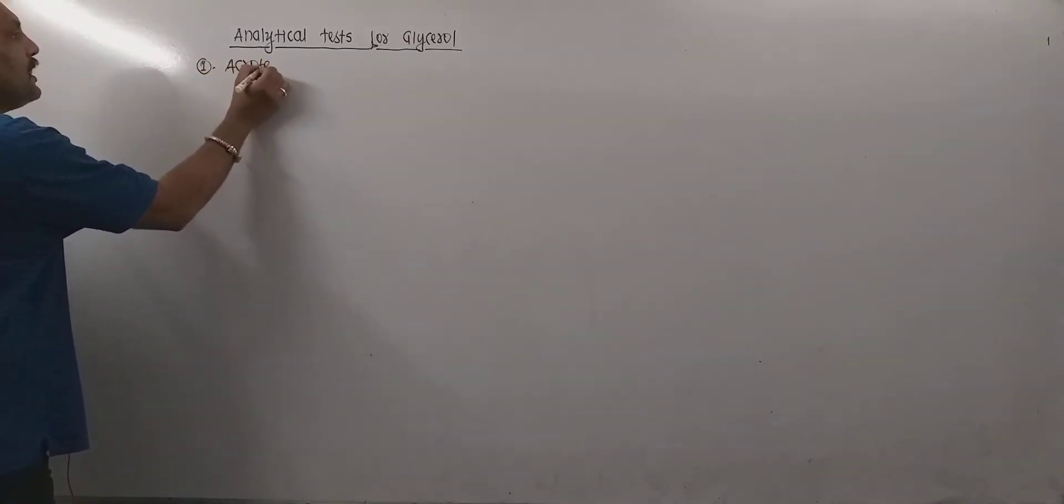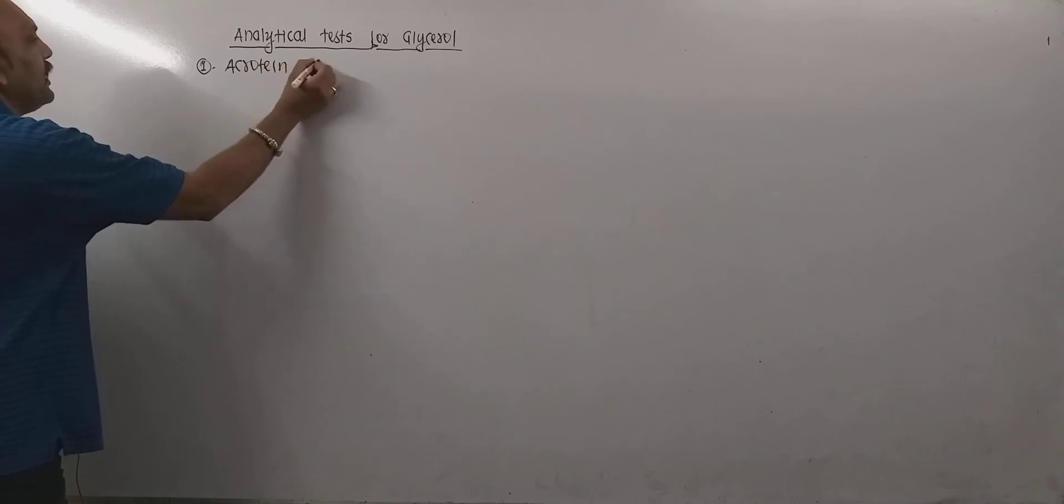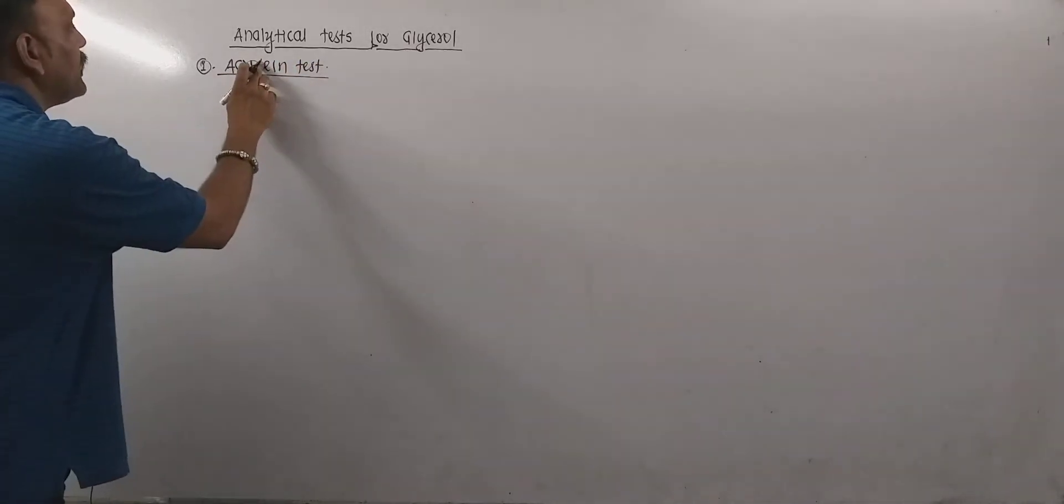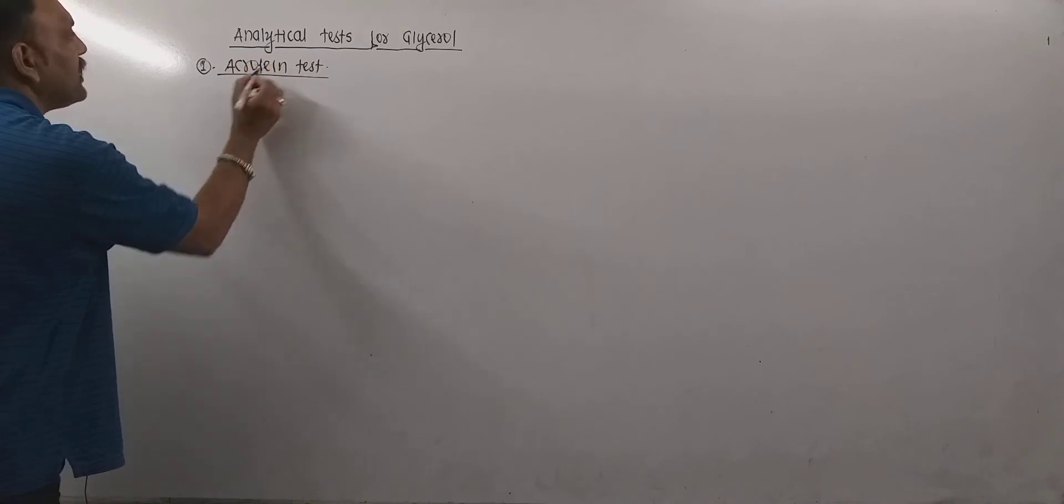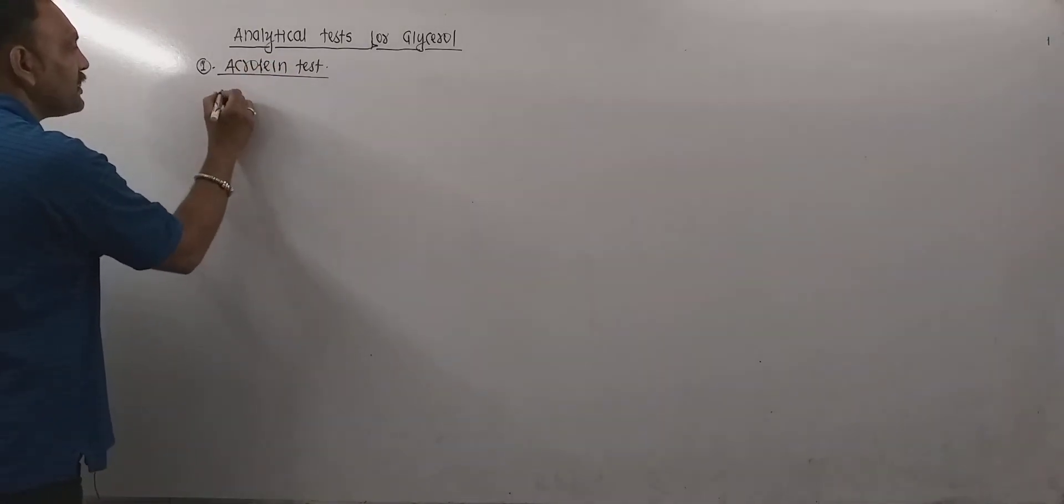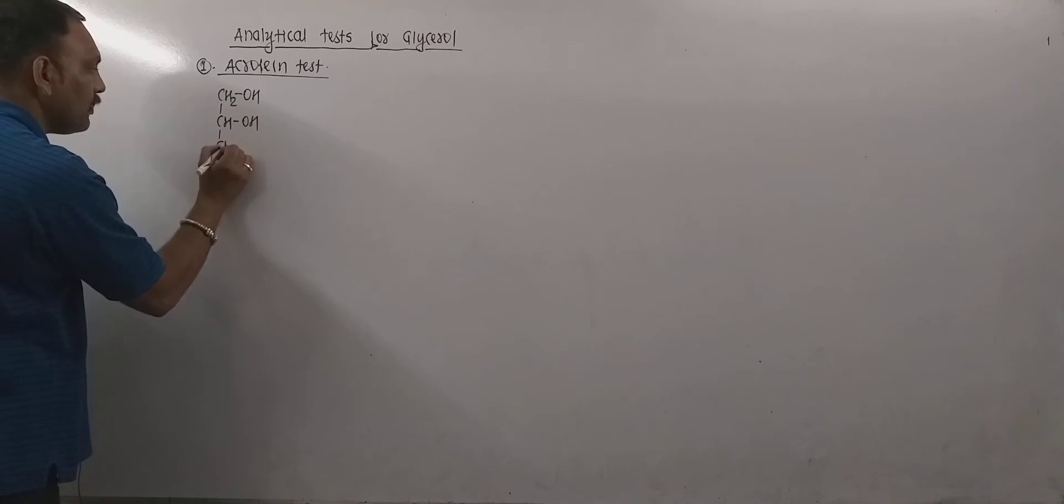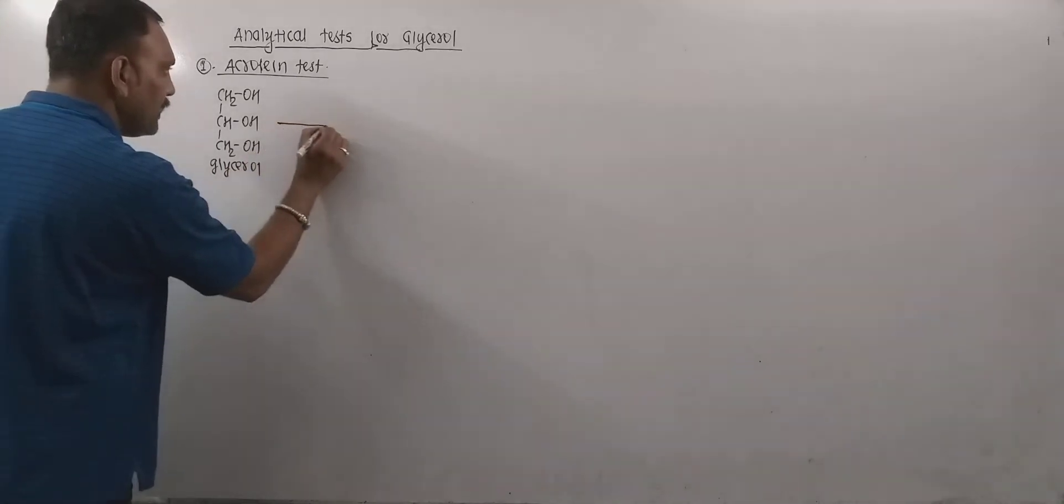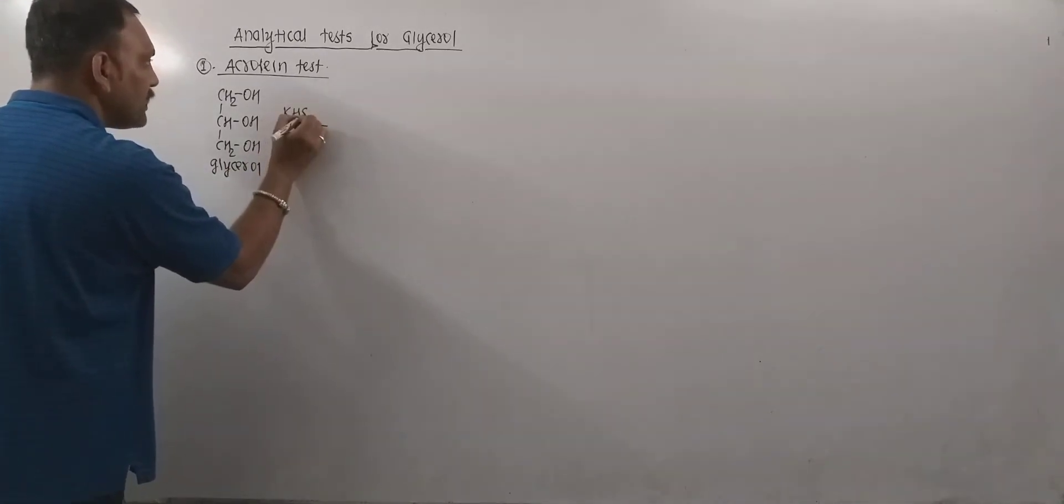So the very first and important test is acrolein test. Remember, acrolein is unsaturated aldehyde. So how to perform this test? Glycerol is to be taken and this glycerol is heated in presence of KHSO4, that is potassium hydrogen sulfate.